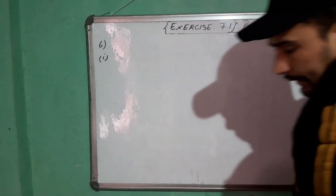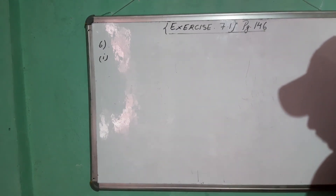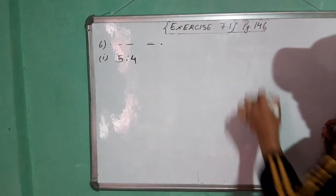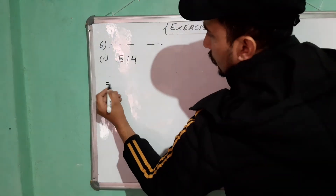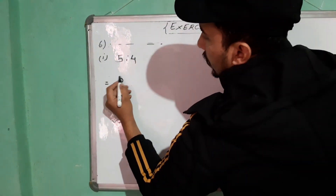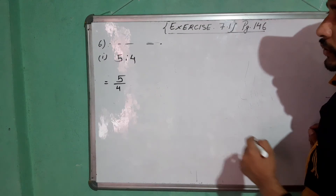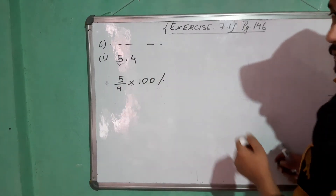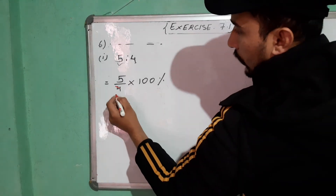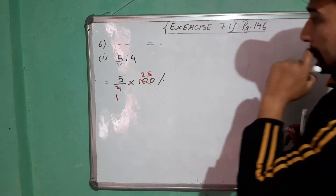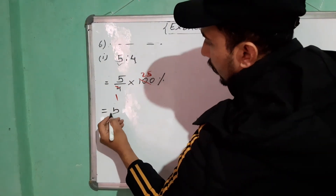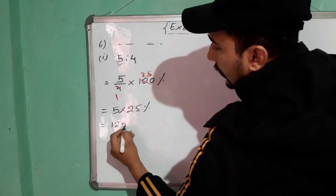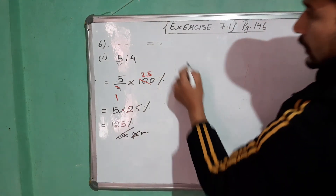Number 6: express the following ratios as percentages. Number 1: 5 is to 4. Copy the question here. To express a ratio as a percentage: 5 divided by 4, multiplied by 100%. Now cancel: 4 twos are 8, 4 fives are 20 — so 5 into 25% equals 125%. Answer: 125%.